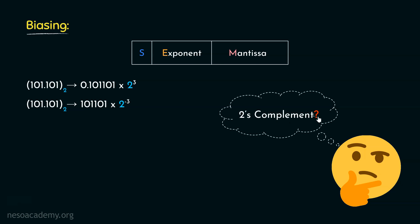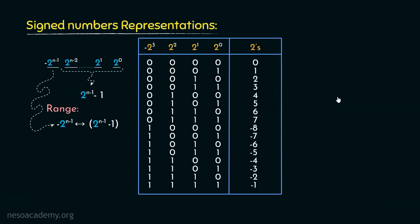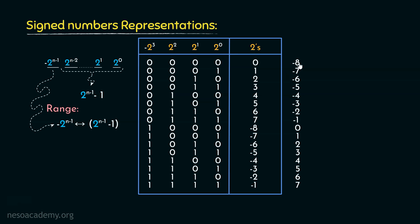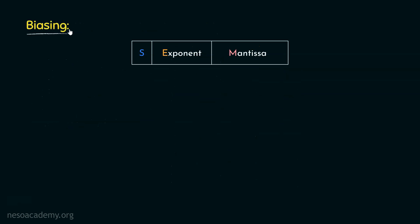You might wonder — is it 2's complement? But if you remember, during the session on representation of signed and unsigned numbers, we observed that the 2's complement representations don't represent values sequentially in terms of magnitude — they go from 0 to positive 7, then from minus 8 to minus 1. Due to this reason, we can't really use 2's complement representation. Rather, we go for biasing.